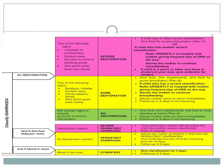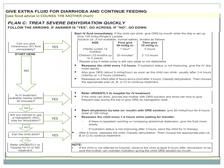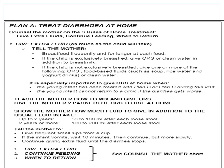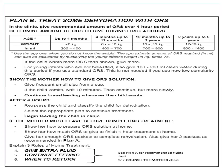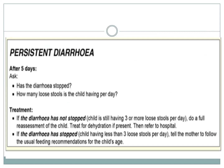If there is blood in the stool, ciprofloxacin is given for three days. To summarize the plans: Plan A — mother is told to give extra fluids and provided two ORS packets for home use. Plan B — ORS is provided at the OPD for some dehydration. Plan C — intravenous treatment is started for severe dehydration.